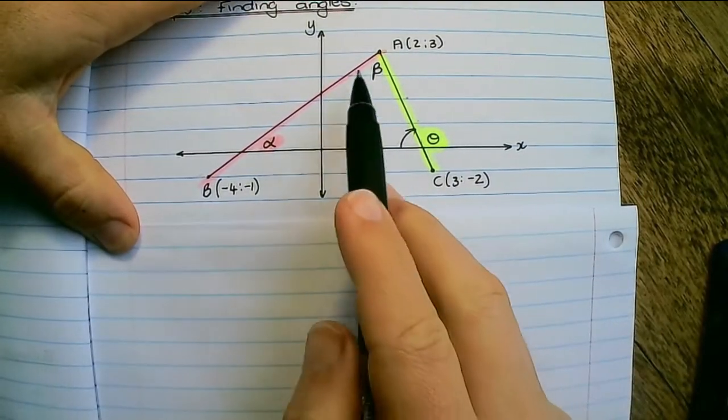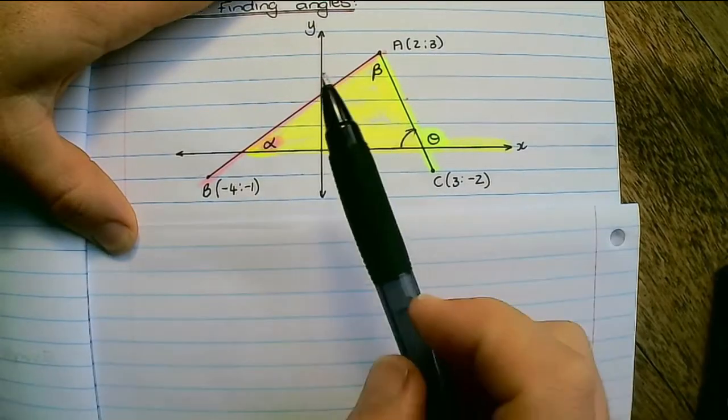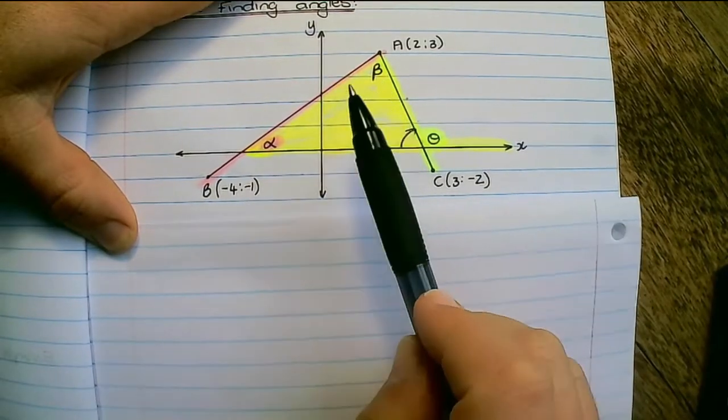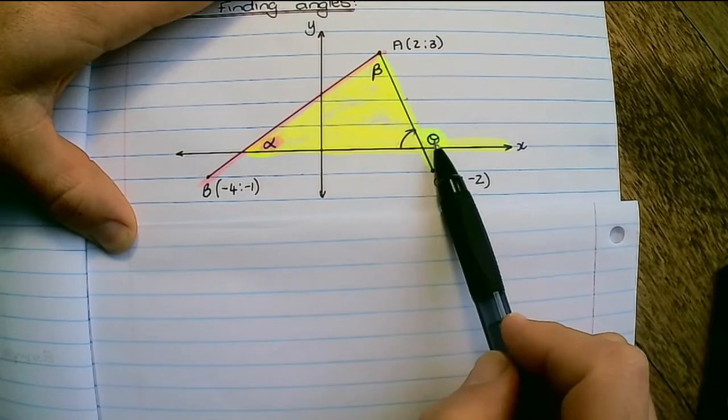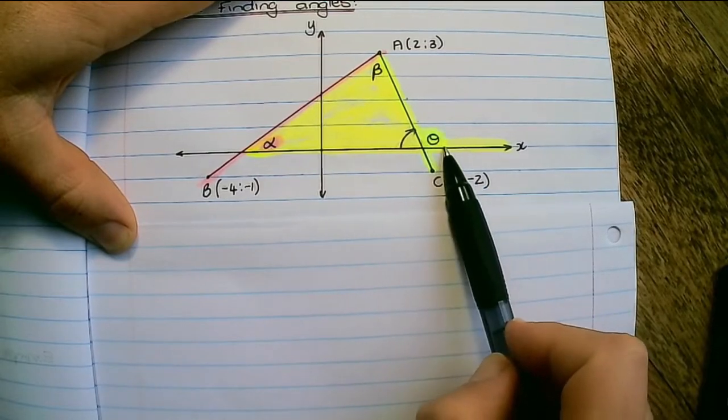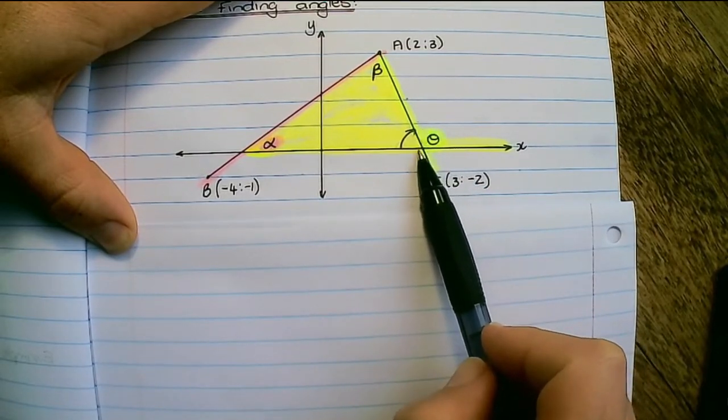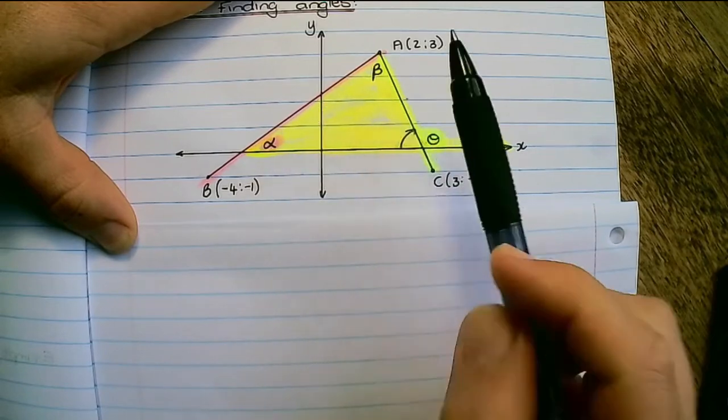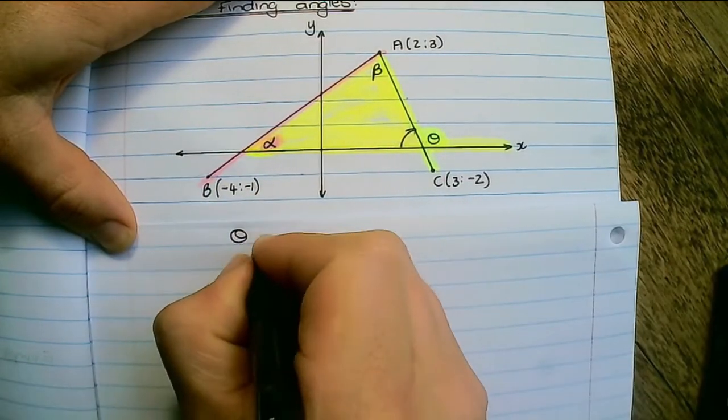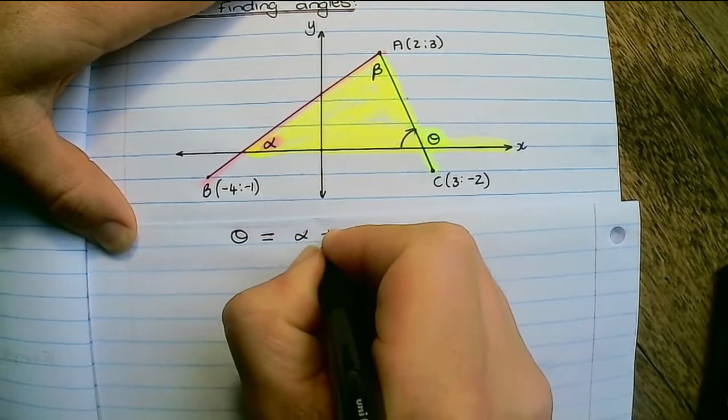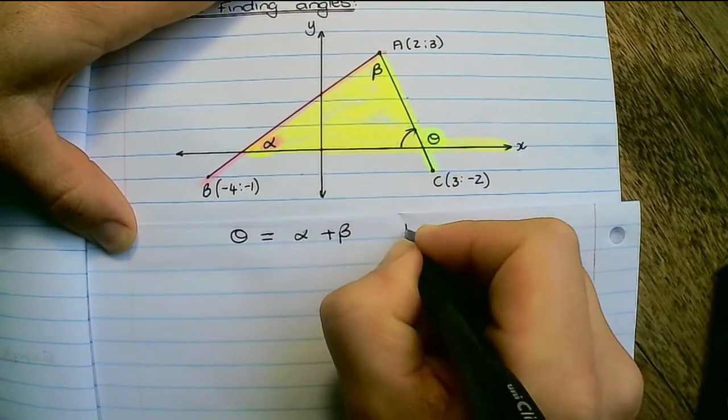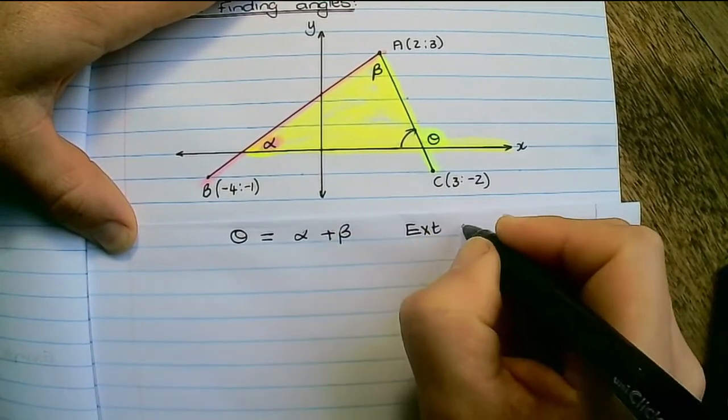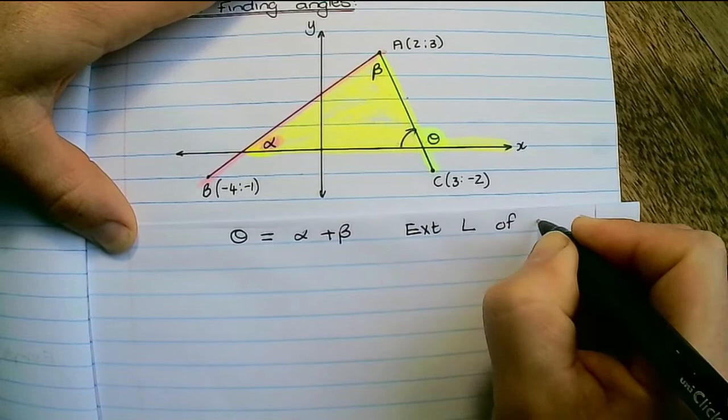And lastly we can find beta. So if we look at the triangle which is colored in, we can see that theta is the exterior angle of this triangle. Therefore theta would be equal to alpha plus beta, the exterior angle of a triangle.